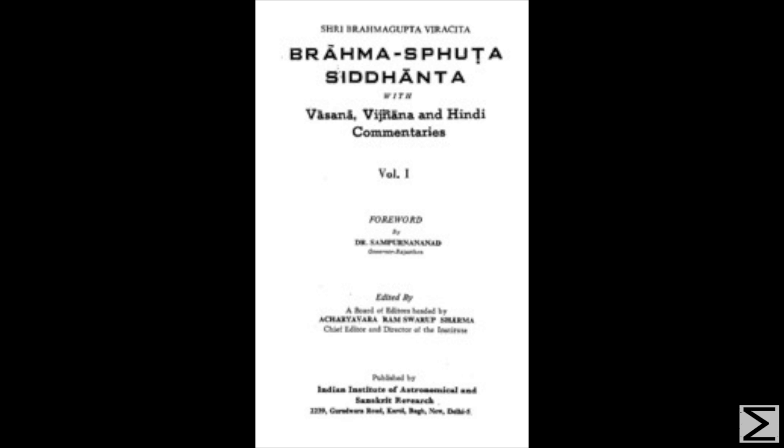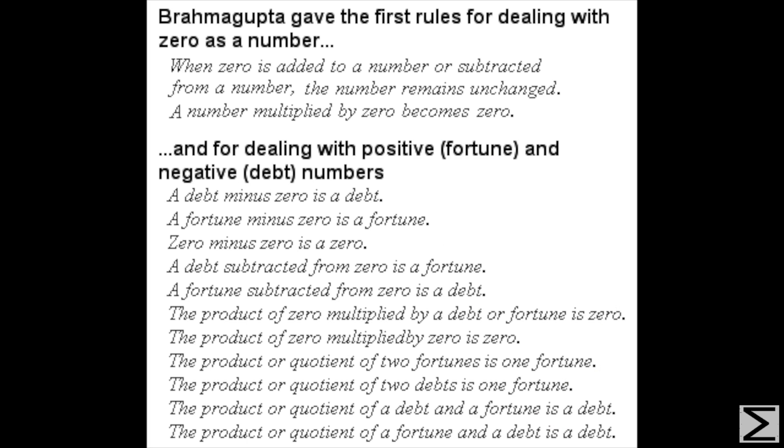Brahma Gupta changed how people thought about zero in his work. This was the first record of treating zero as an integer that has been recorded. Although he incorrectly assumed that an integer divided by zero equals zero, he made several correct assumptions. He correctly surmised that the addition or subtraction of zero to any number would leave the number unchanged, and that the multiplication of zero by any number would equal zero. With this knowledge and interpretation of zero as an integer, he was able to work with negative numbers.